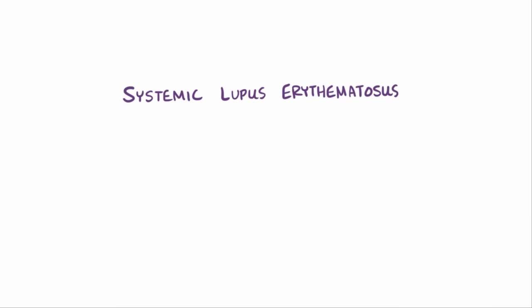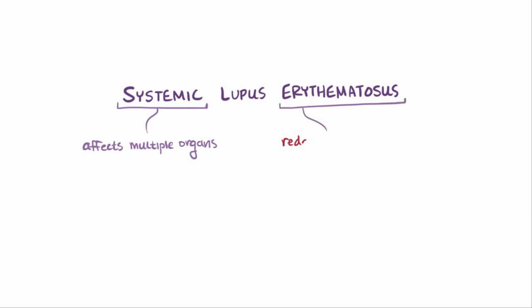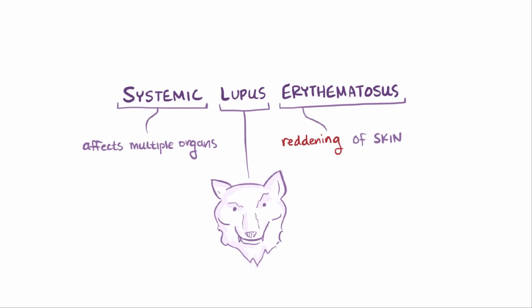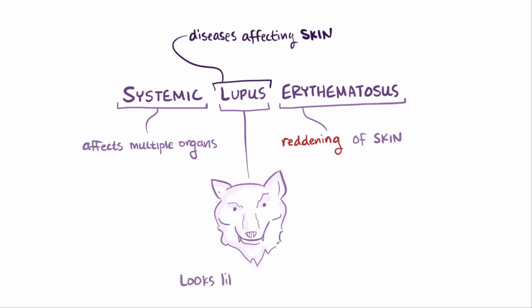Systemic lupus erythematosus — 'systemic' refers to affecting multiple organs in the body, 'erythematosus' means reddening of the skin, and 'lupus' is Latin for wolf. The modern use of lupus refers to a variety of diseases that affect the skin, possibly because these diseases resemble a wolf bite on the patient's skin.